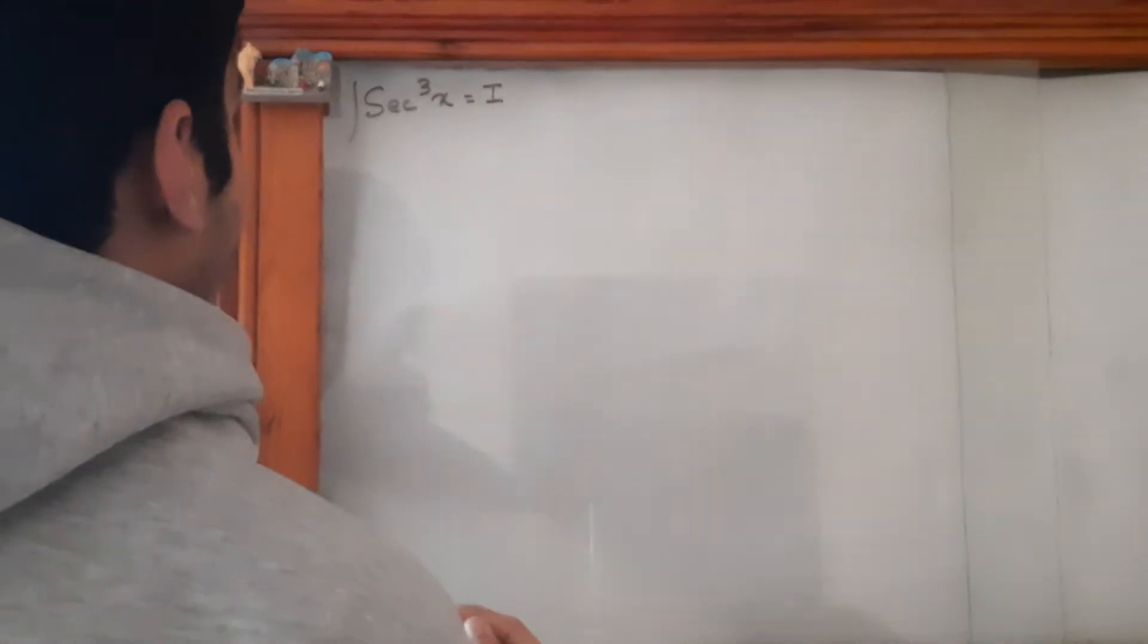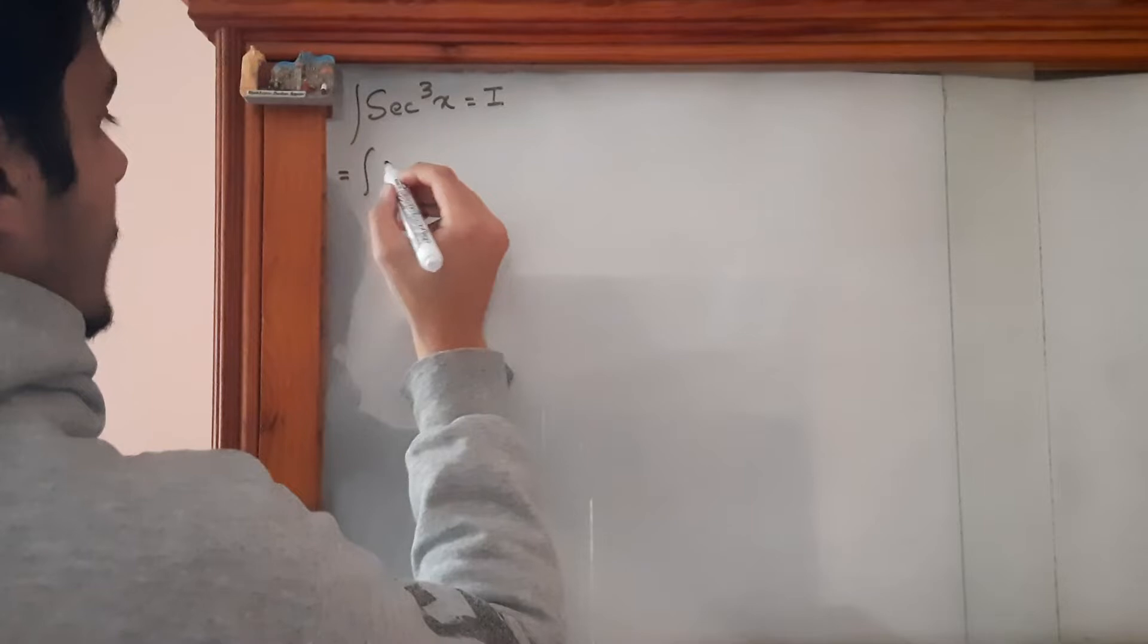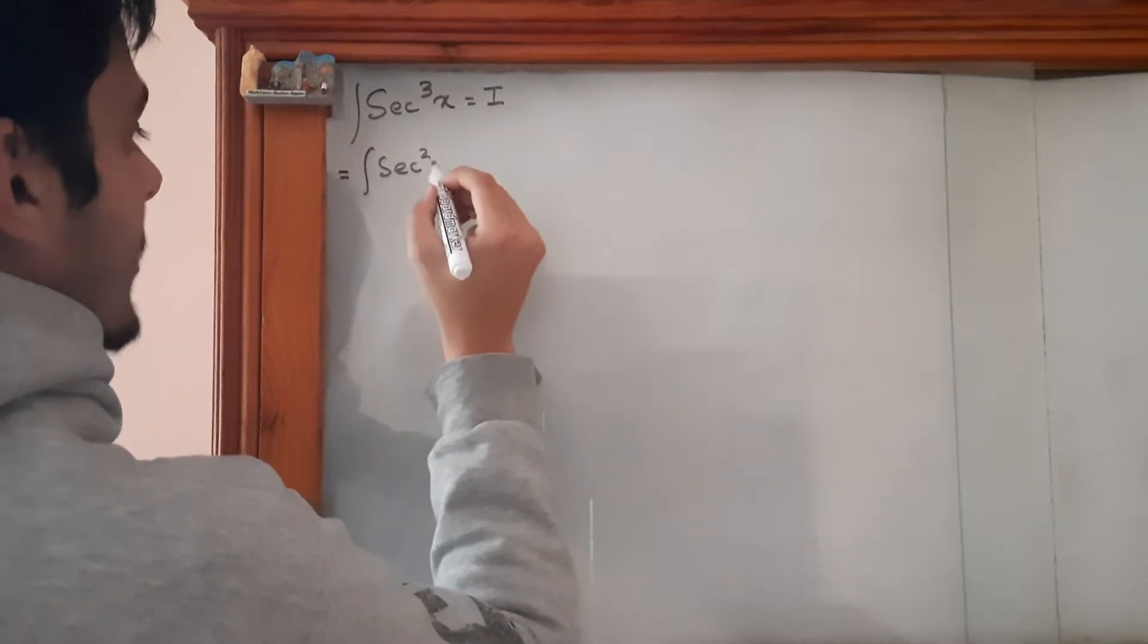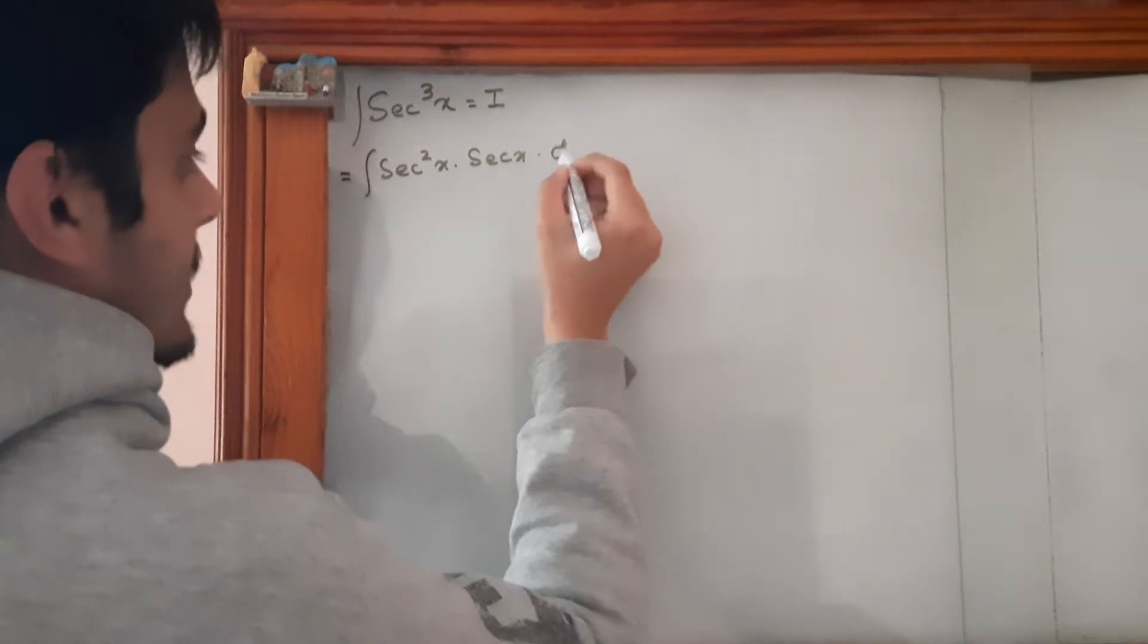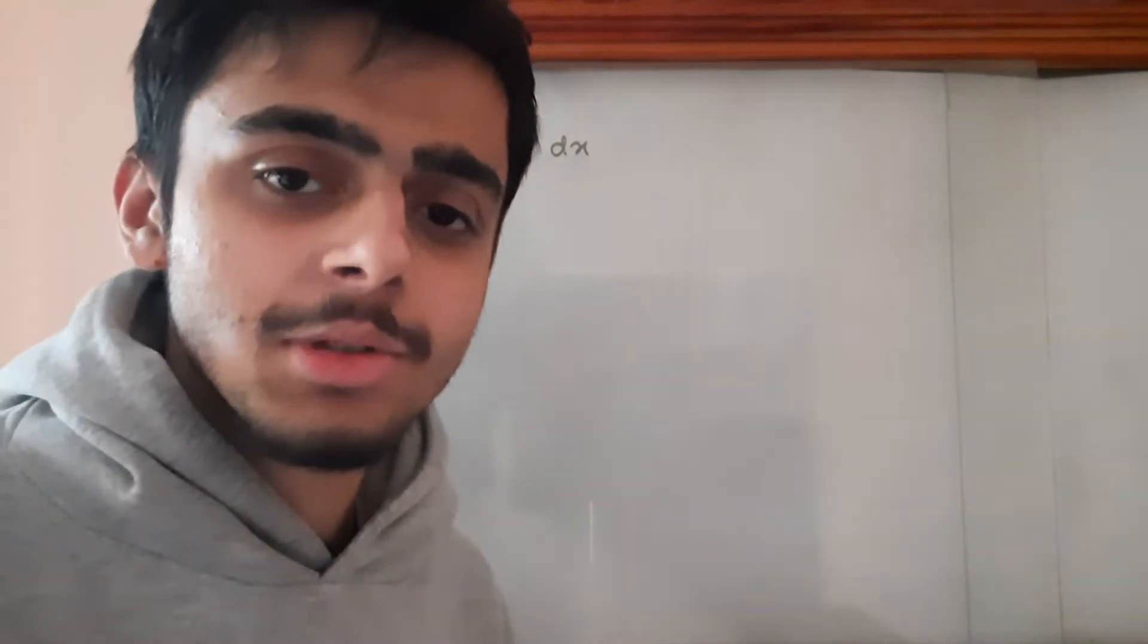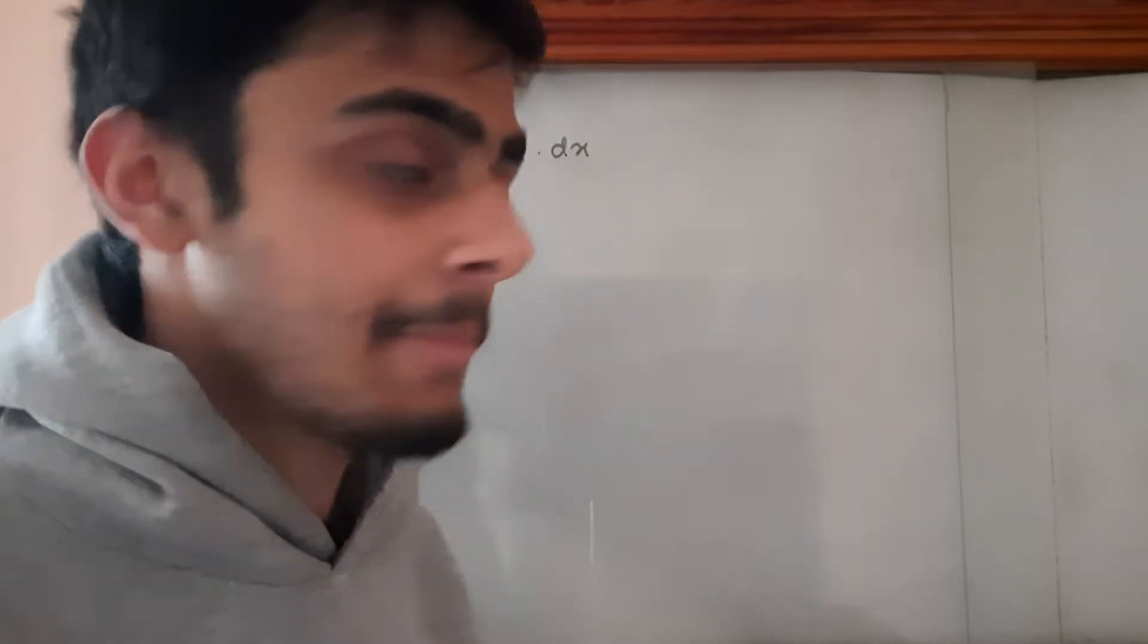sec³x can be expressed as sec²x times secx, and now we're going to use the formula of integration by parts.